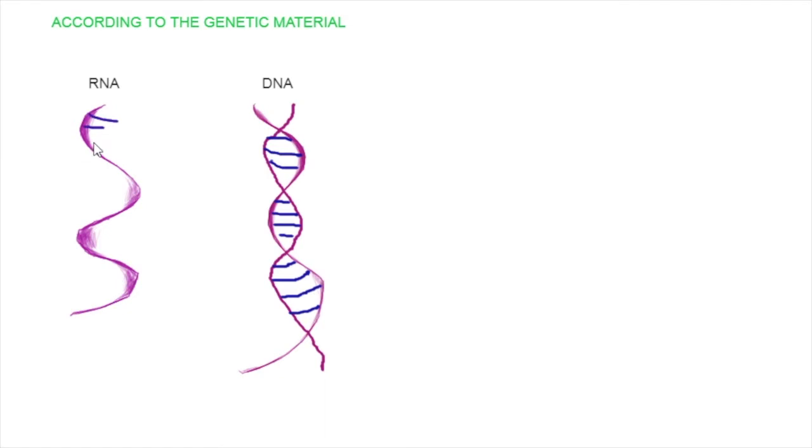According to their genetic material, we have two options. Either they have DNA that we have already seen and it's formed of two branches, or they have a simpler version called RNA that is only one of the branches.